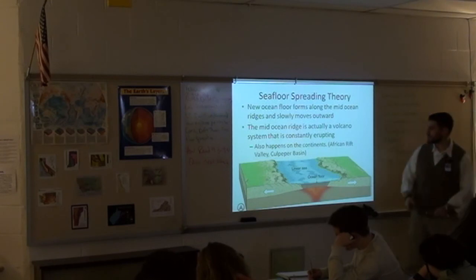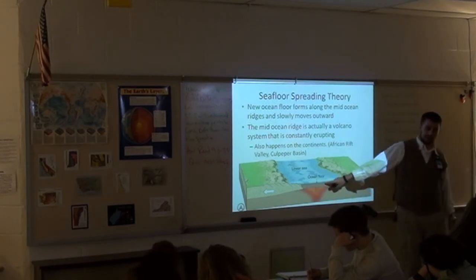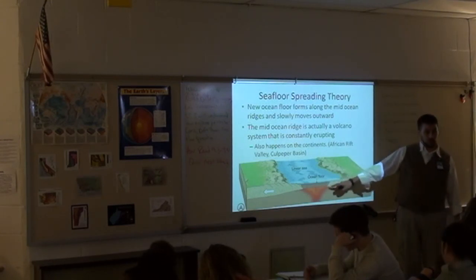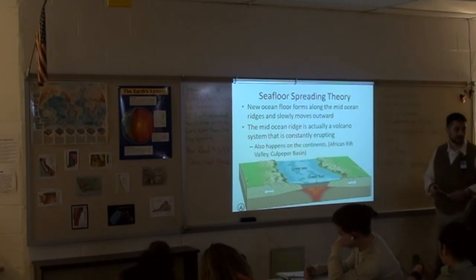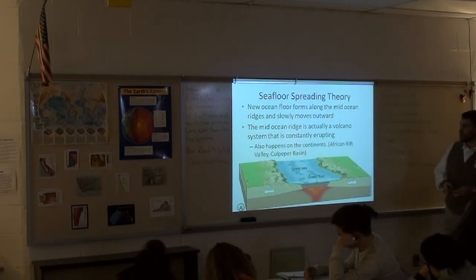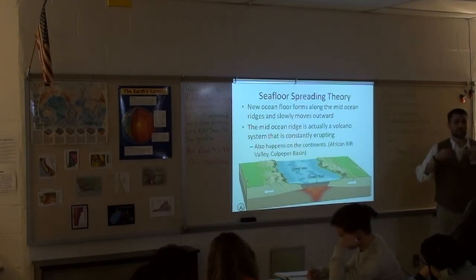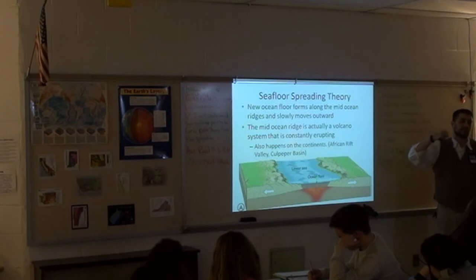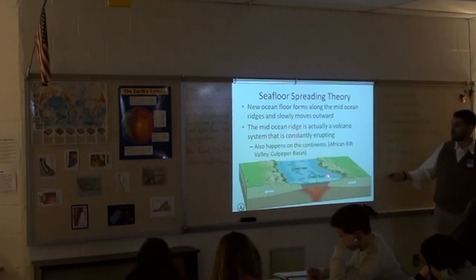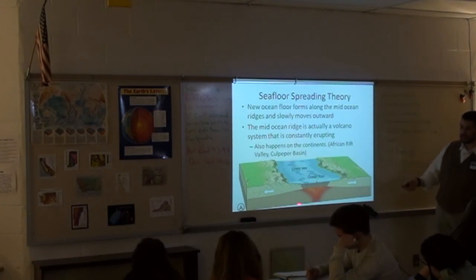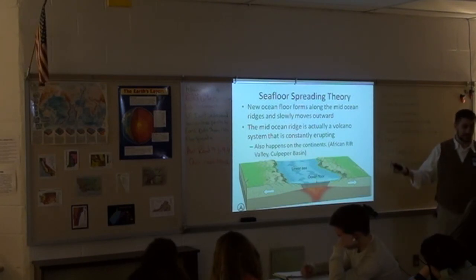Sea floor spreading basically states that new ocean floor is forming at the mid-ocean ridges. Magma is coming up, it's forcing the crust apart, making new crust. The plates are moving apart. The idea is that the sea floor is spreading.